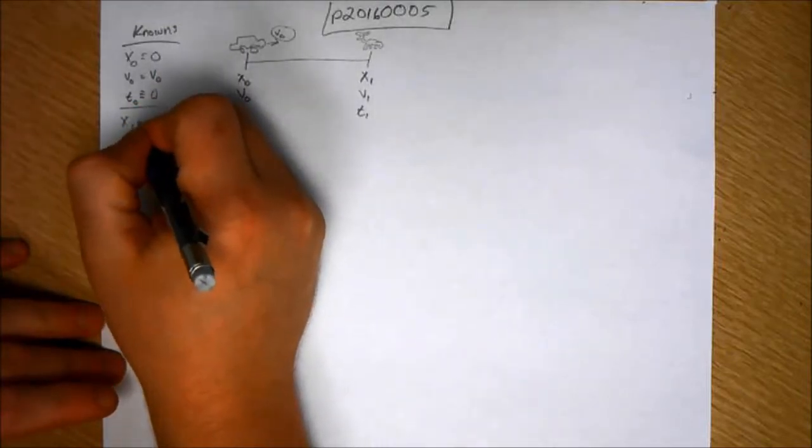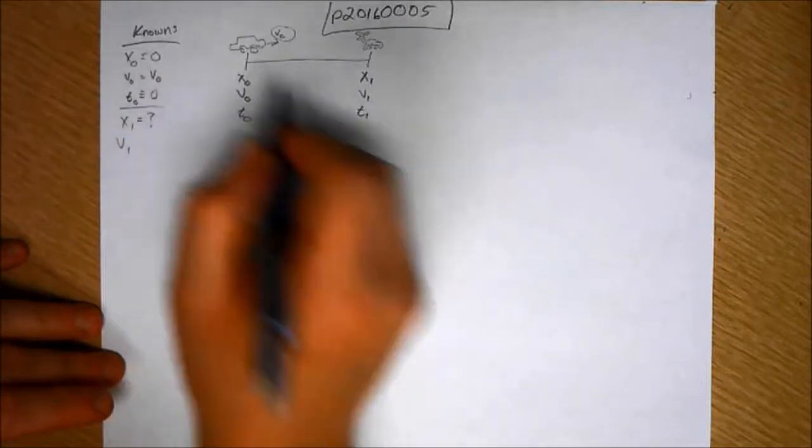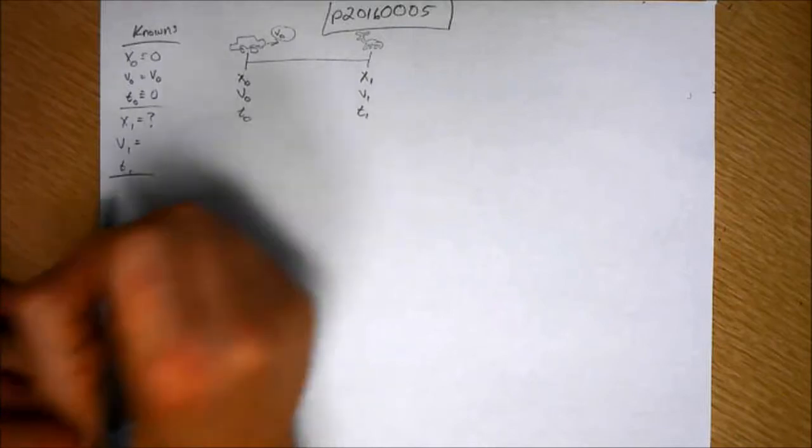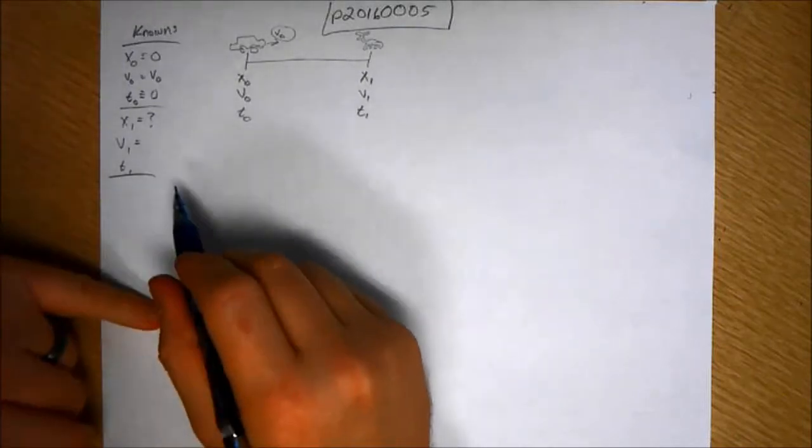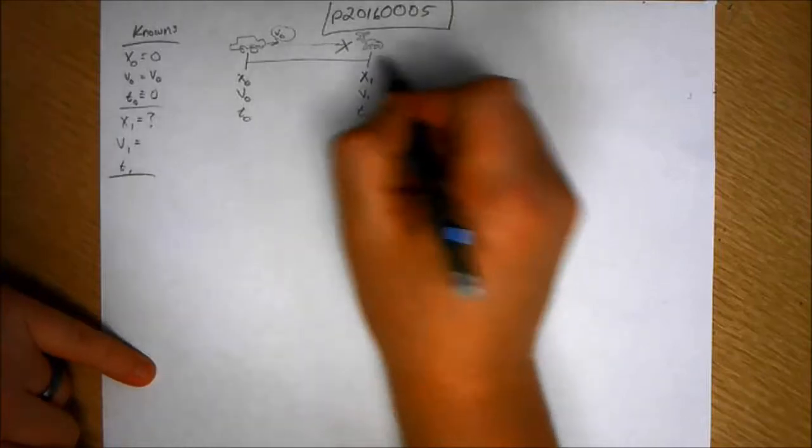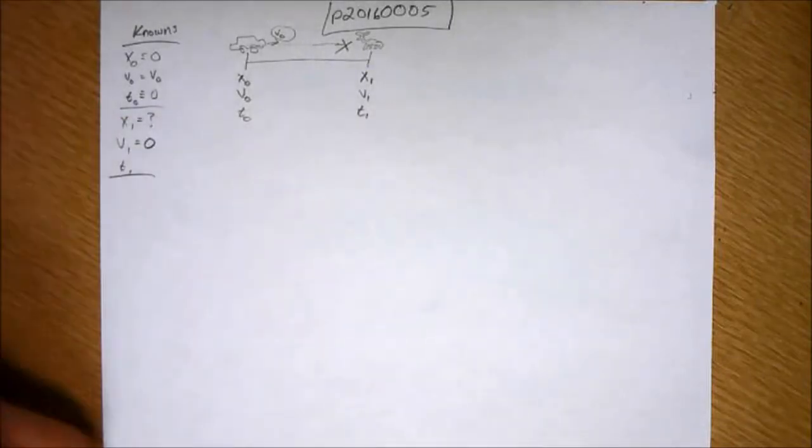X-one, we don't know that. V-one, T-one. Here's the thing. What is V-one? Well, the car is screeching to a stop. It wants to stop before it hits the moose. So V-one, we know, is zero.